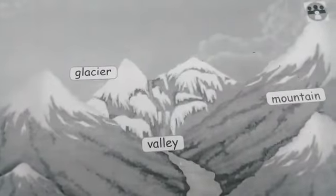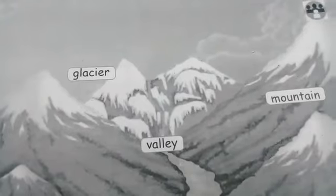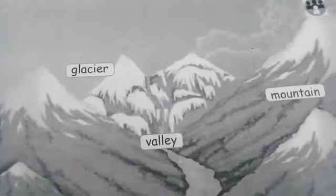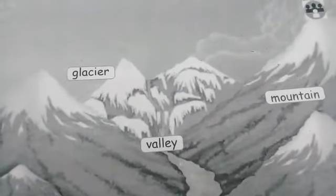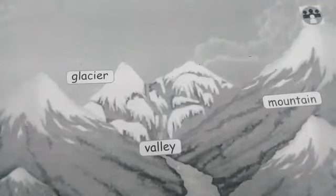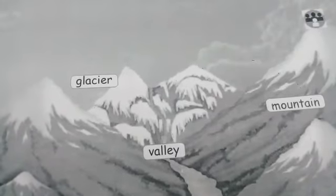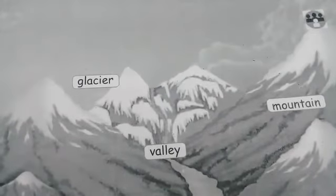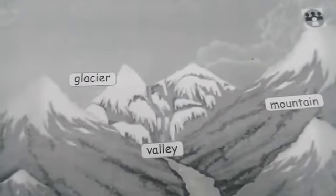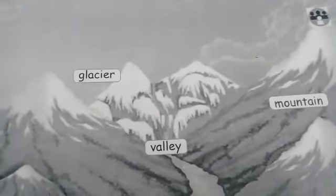Then next one is glacier. Glacier - Tamil meaning paniyaru. A glacier is a mass of ice that moves slowly down a valley.